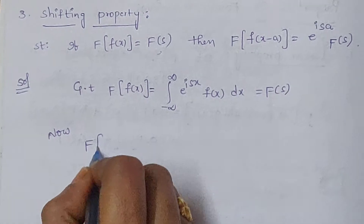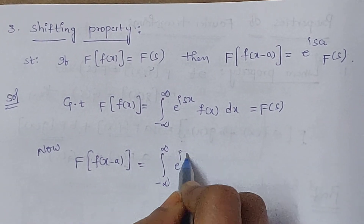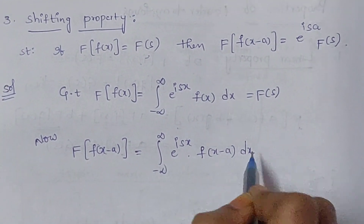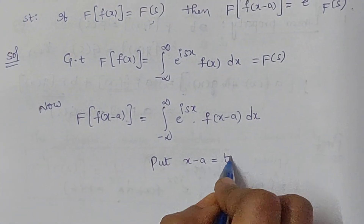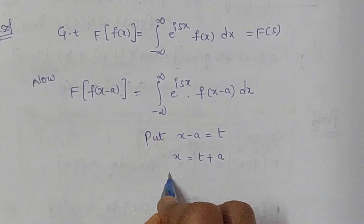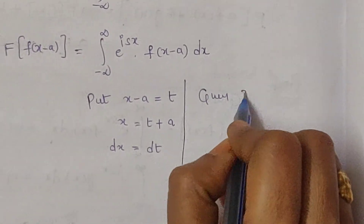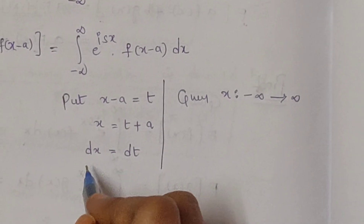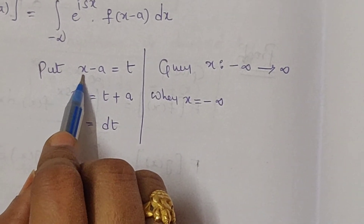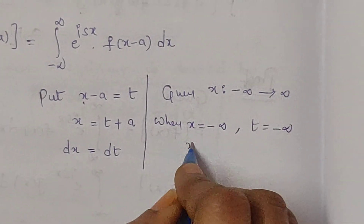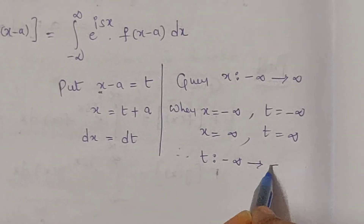To find the Fourier transform of f of x minus a, it equals, according to the definition, the integral from minus infinity to infinity of e power isx times f of x minus a dx. To evaluate this integral, use the substitution: put x minus a equal to t, so x equals t plus a, and differentiating, dx equals dt. The x limits are from minus infinity to infinity; when x equals minus infinity, t becomes minus infinity, and when x equals infinity, t becomes infinity, so the t limits are from minus infinity to infinity.